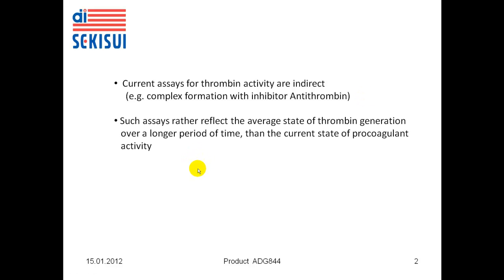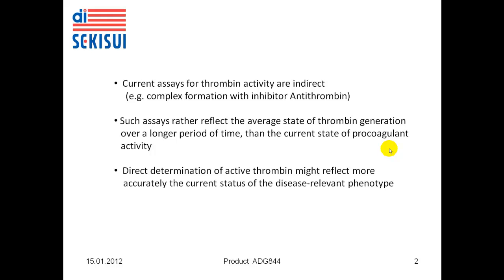Such assays rather reflect the average state of thrombin generation over a longer period of time, and they do not accurately reflect the current state of procoagulant activity. The direct determination of active thrombin might more accurately reflect the current status of the disease-relevant phenotype — that is, the appearance of active thrombin in a given sample.